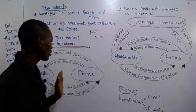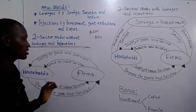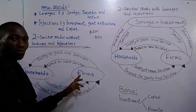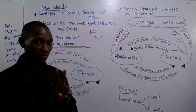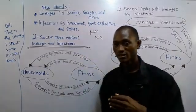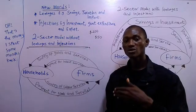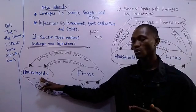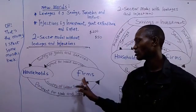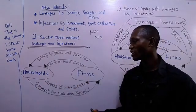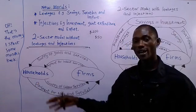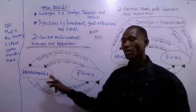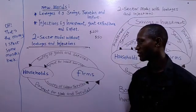So let's talk about the two-sector model with respect to households and business firms. We have three sectors — individuals, firms, and governments — but with respect to the two-sector model, we're going to be looking at households and firms. So how does income move from the household to the firm, or from the firm to the household?